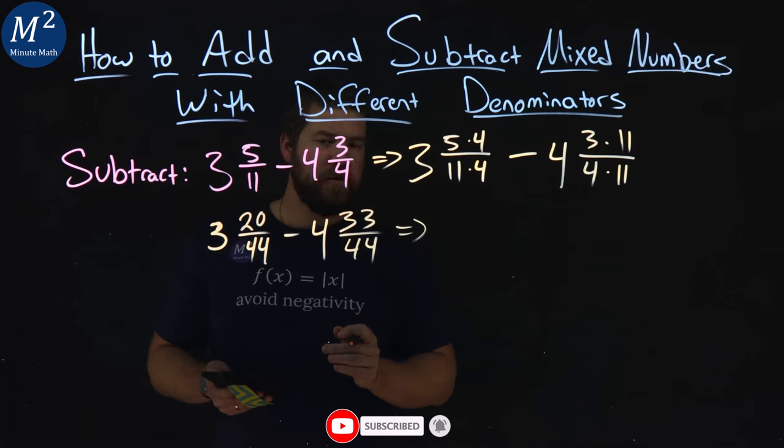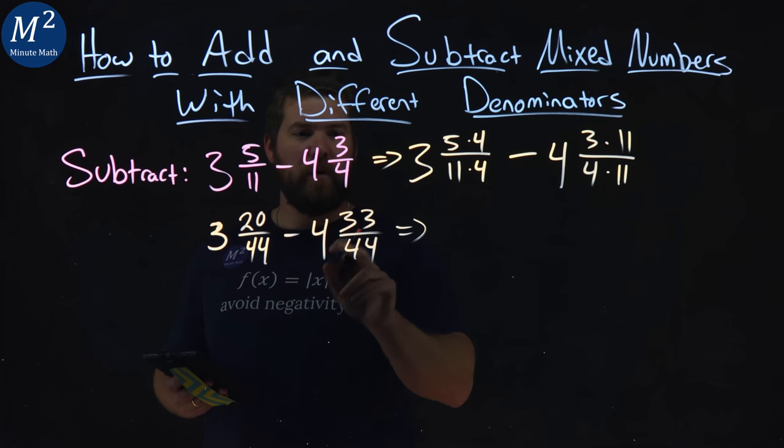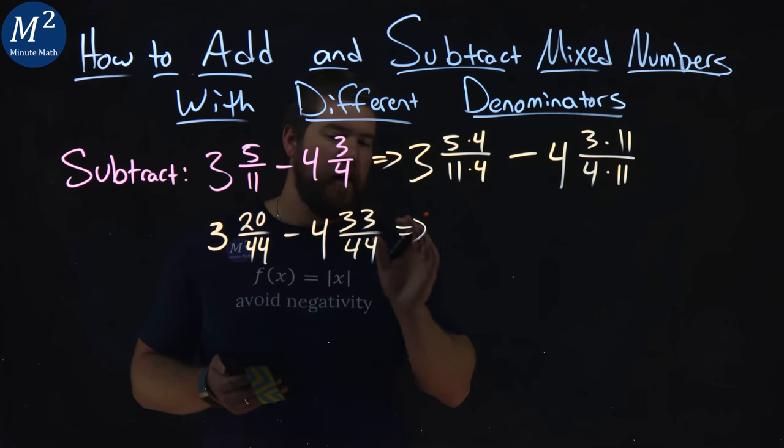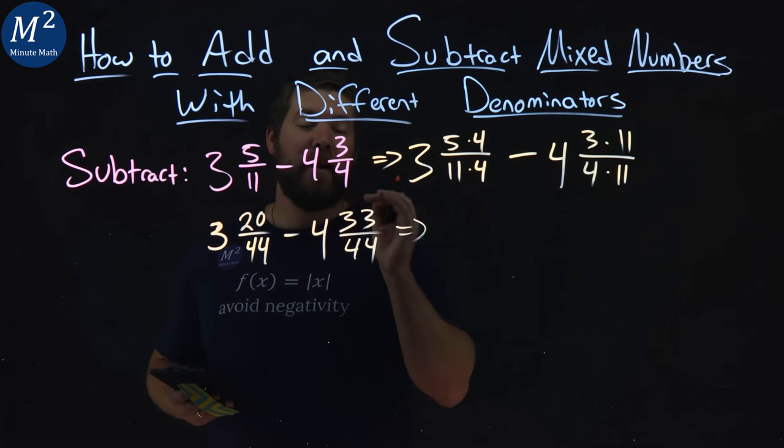Now, these numbers, if I notice, the left number is going to be smaller than the right one, right? 3 and 20 over 44 minus 4 and 33 over 44. The 4 and 33 over 44 is going to be larger, making this whole thing going to be a negative answer.